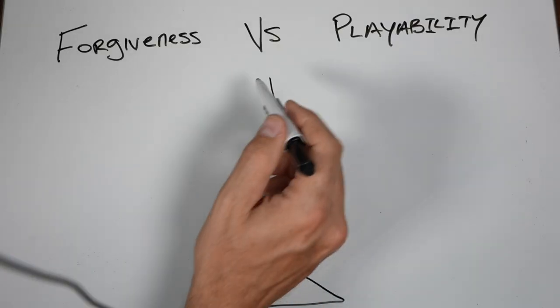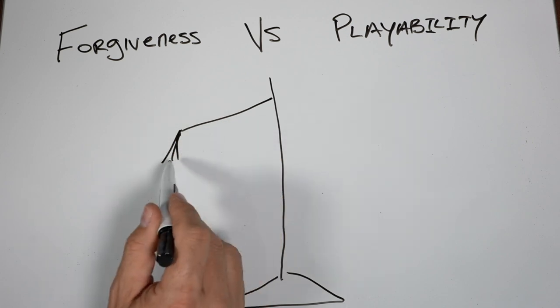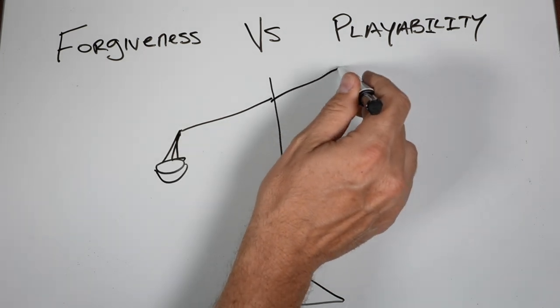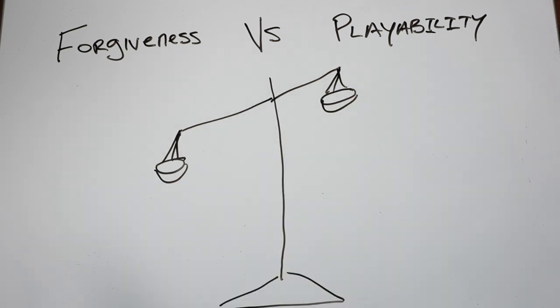This has to do with a number of different factors. I want you to think of these kind of like a lever or a scale. On one side of this scale you've got forgiveness, on the other side you've got playability.